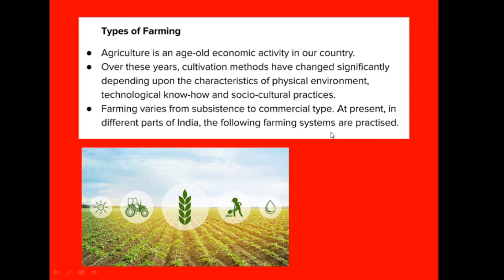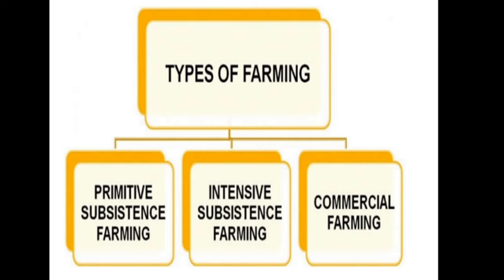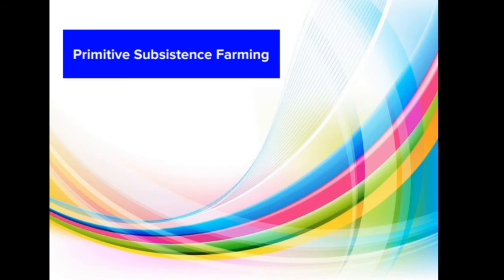At present, India has three kinds of important farming: primitive subsistence farming, intensive subsistence farming, and commercial farming. Primitive subsistence farming is also known as slash and burn agriculture. In CBSE 2016, a question was asked: what is slash and burn agriculture? In this video, we will also cover previous year questions.